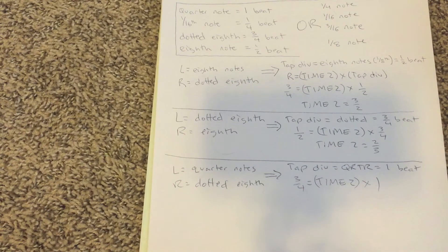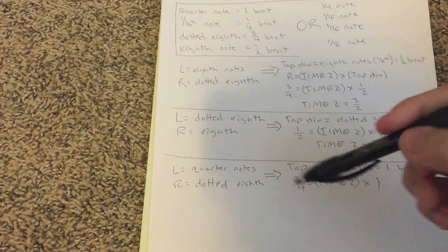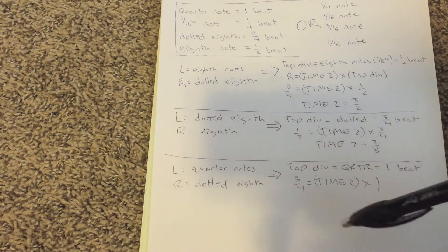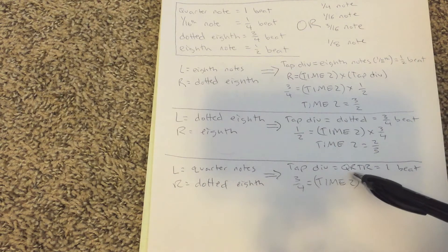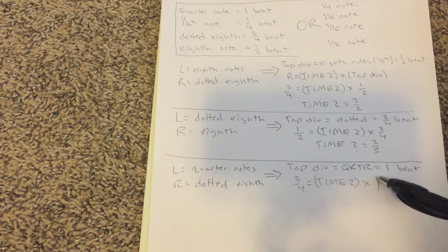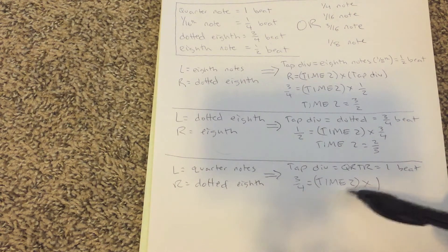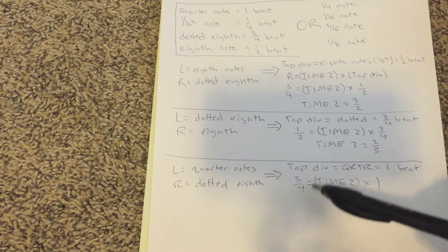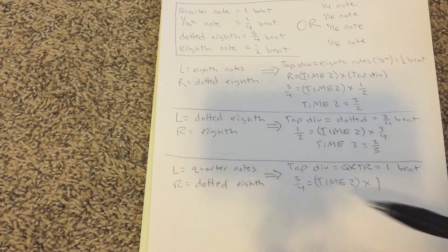And then here's another example where if you wanted quarter notes coming out of your left and dotted eighths coming out of your right, pretty easy. Tap division, it's called QTR for quarter in the Timeline. And that's one beat. This equation again, you want three fourths, time two times one. Set time two to three fourths. And your tap division to quarter, you'll get this. So I'll show that again.